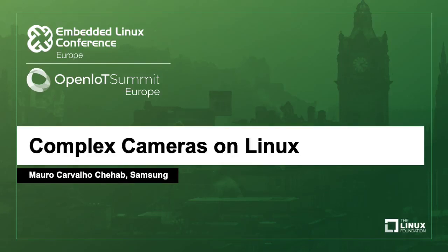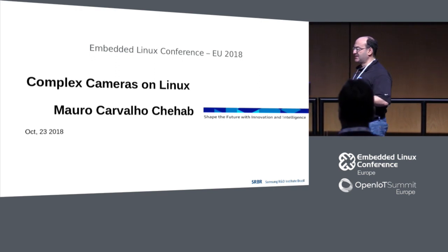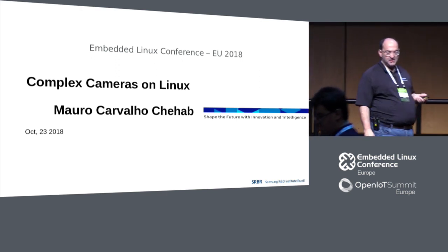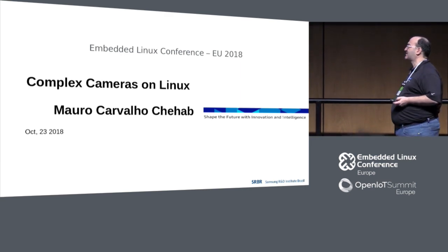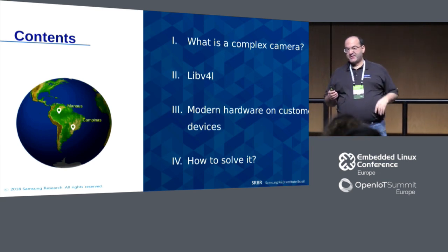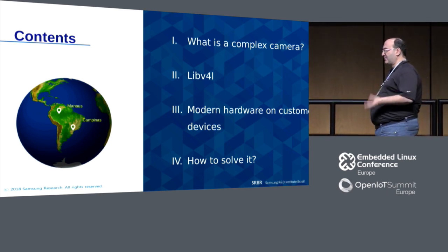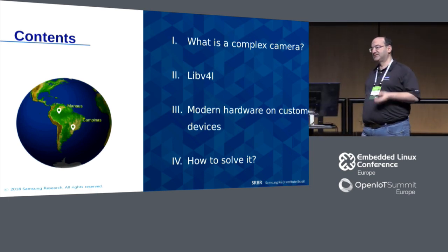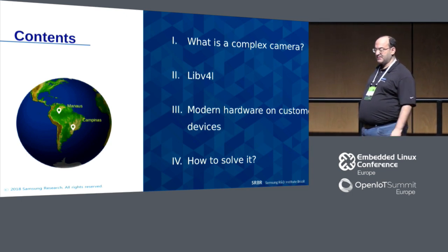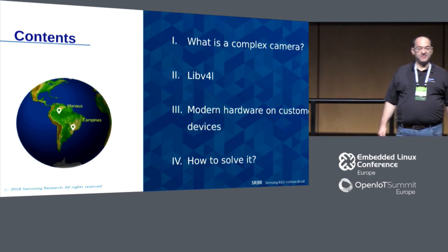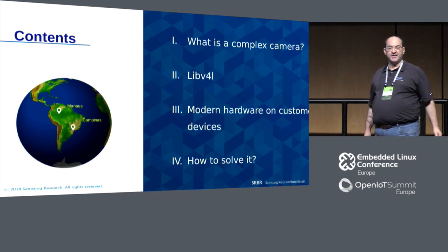The goal of this presentation is to explain what we are doing right now at the Linux Media Subsystem. This is one of the hottest topics happening right now. It is related to the way we handle cameras, not only at the kernel side but also at the user space side. We will talk about what a complex camera is in our sense, how we solved camera issues in the past using Video for Linux, modern hardware coming with embedded devices, and how to make them work with generic applications.